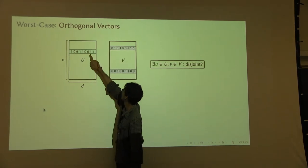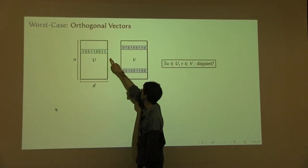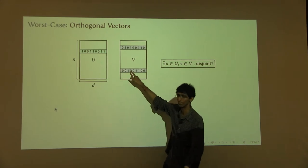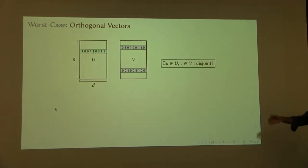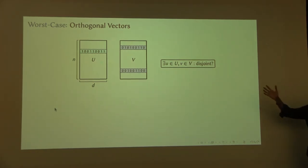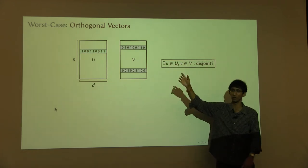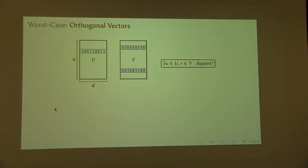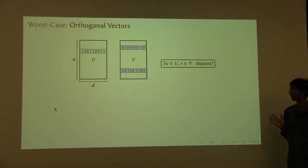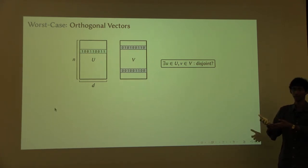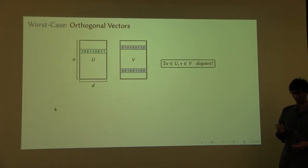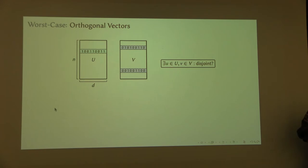If there's no position where both of them have a 1, they are disjoint — that is the orthogonal vectors problem. It's called orthogonal vectors because if you take vectors that are disjoint, then they will be orthogonal over the integers. This is a pretty well-studied problem with connections to lots of other problems. For example, it relates closely to questions like computing the edit distance between strings or computing the longest common subsequence. It has connections to lots of other problems.